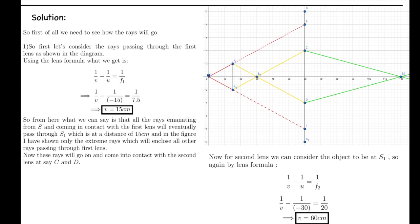Using the lens formula, 1/V − 1/U = 1/F1, where F1 is the focal length of the first lens, the value of V — the image distance for the first lens — comes out to be 15 cm. So all the rays emanating from S and passing through the first lens will eventually converge at S1, which is at a distance of 15 cm.